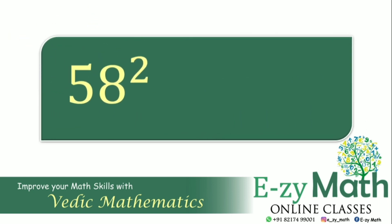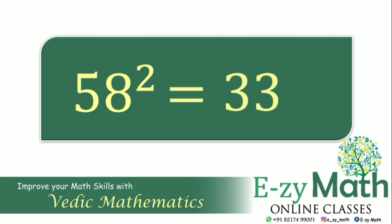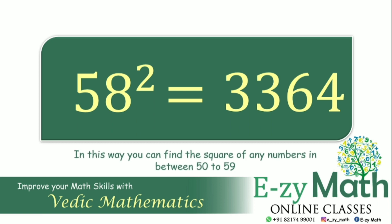Now let's find 58 square. So 58 square is 3,364. In this way, you can find the square of any numbers in between 50 to 59.